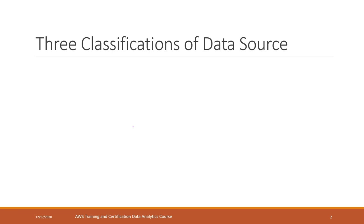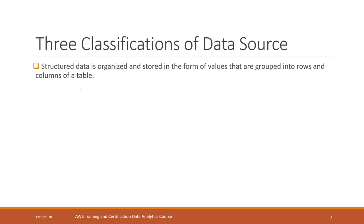Before we start, let's review the different types of data sources. We already mentioned that data can be structured, meaning the data is organized as tables with different rows and columns. You can define the type of each column and also define constraints like foreign keys and primary keys, so those tables can be related with each other and data can be organized very efficiently.